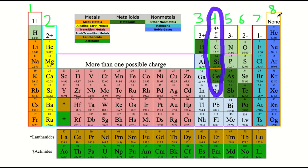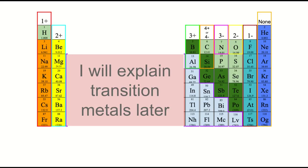Your noble gases here don't have a charge. As far as this block right here — the transition metals — don't worry about it; I'll explain later what's going on with their charges. But for now, just know that this column matches up to 1+, 2+, 3+. Don't really worry about these too much, but know that they could be 4+, or 4-, 3-, 2-, 1-, and the noble gases don't have a charge.